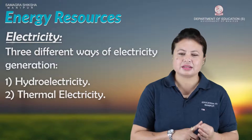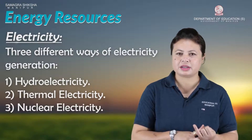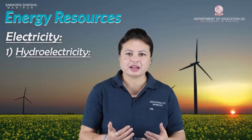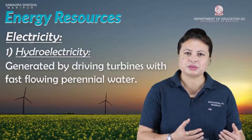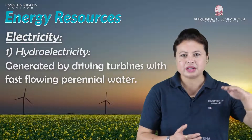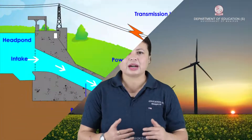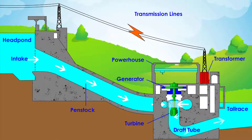Hydroelectricity — hydro means water. Fast-flowing perennial rivers are used. Water flows through pipes and strikes turbine blades with a certain force. The turbine is connected to a generator, which produces electricity.